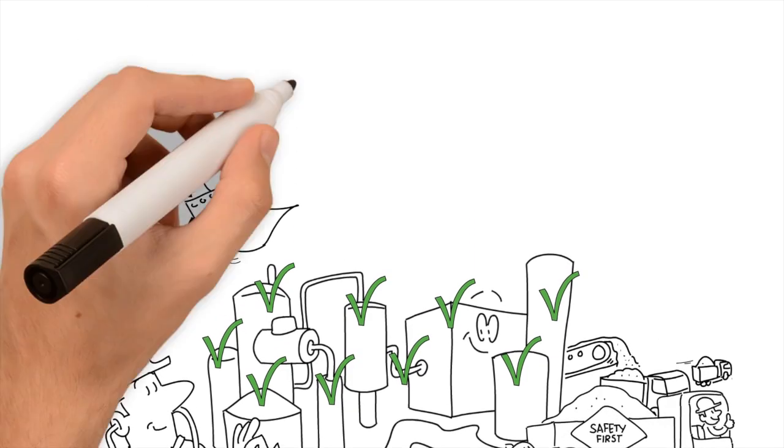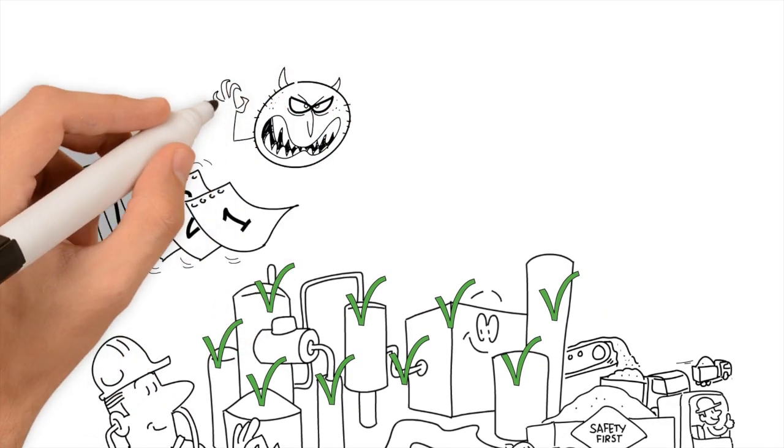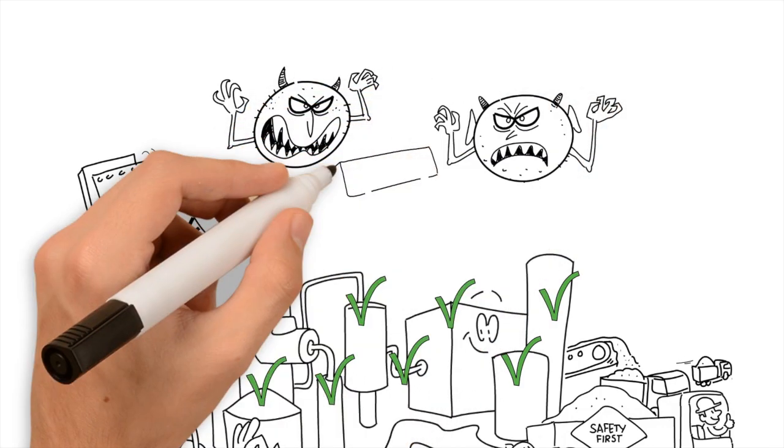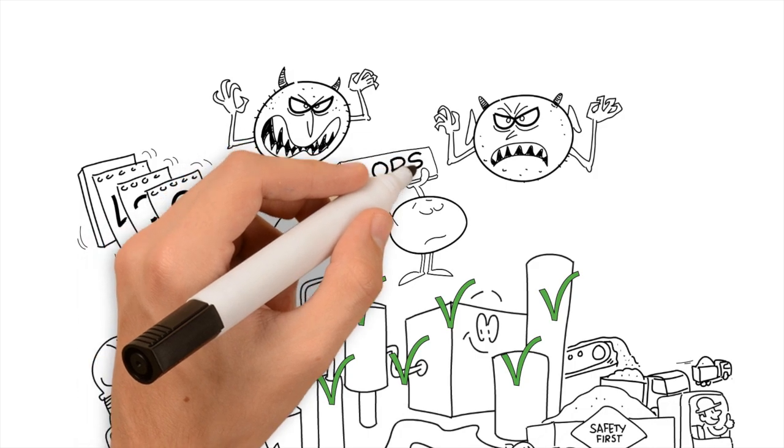However, you have three foes: one, corrosion; two, erosion; and three, unawareness.